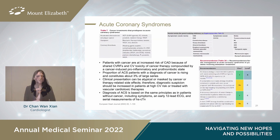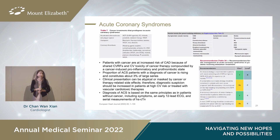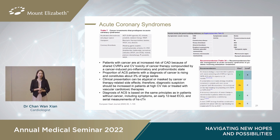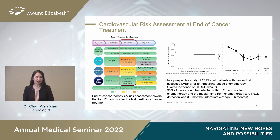Certain cancer treatments predispose to acute coronary syndrome through accelerated atherosclerosis, plaque rupture, vasospasm, and coronary thrombosis. In cancer patients, ACS presentation can be atypical or masked by cancer or therapy-related side effects. These patients should receive treatment according to general cardiology guidelines for STEMI and NSTEMI if life expectancy is six months or more. Upon completion of cancer therapy, it is important to continue monitoring surveillance for cardiotoxicity, especially in the first one year. The overall incidence of cancer therapy-related cardiotoxicity is 9%, with up to 98% detected 12 months after completion of therapy, with a median time of 3.5 months.